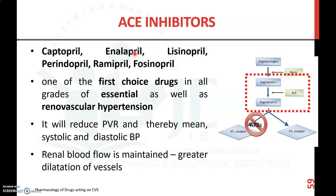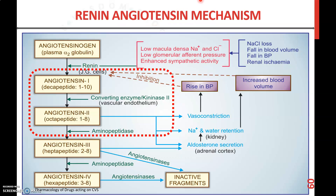ACE inhibitors are one of the first-choice drugs in all grades of hypertension, especially essential as well as renovascular hypertension. These drugs reduce peripheral vascular resistance, thereby reducing mean systolic and diastolic pressure. Regarding the mechanism of action, ACE inhibitors inhibit the conversion of angiotensin 1 to angiotensin 2, which is responsible for vasoconstrictive action and rise in BP, thereby preventing the rise in blood pressure.